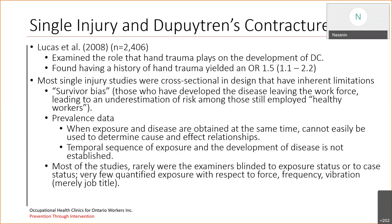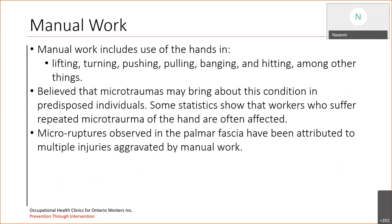The second limitation would be the prevalence data: when exposure and disease are obtained at the same time, it's not easy to determine the cause-and-effect relationship because the temporal sequence of exposure and development of the disease is not established. Lastly, in most of the studies, examiners were rarely blinded to the exposure status or case status, and very little quantification in terms of exposure was presented — such as force, frequency, or vibration — with workers merely classified by job titles. We need more research to tell us more about these quantifications.